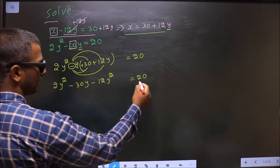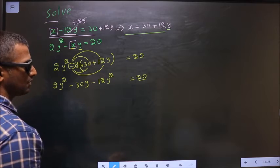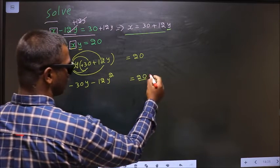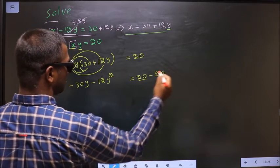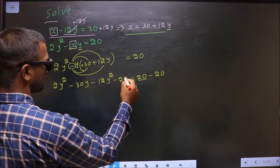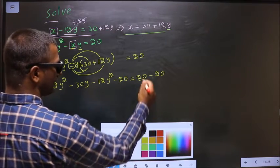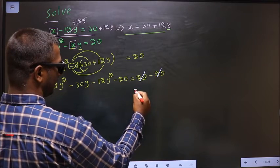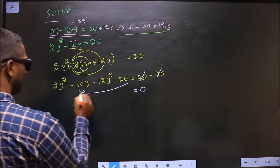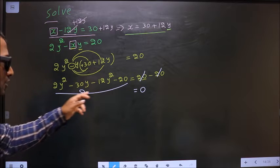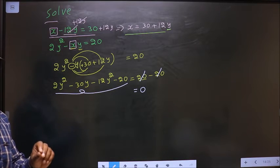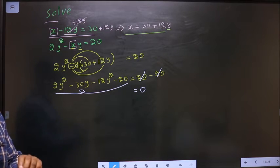Now, this 20 should not be present on this side. So to remove 20 from this side, you subtract 20 on both sides. This cancel out. I get 0. And here, you simplify the like terms and write it in proper quadratic form.